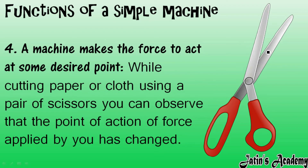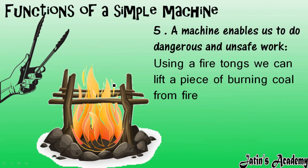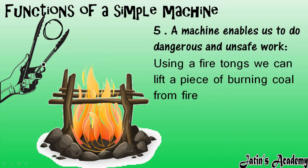The fifth function of a simple machine is that a machine enables us to do dangerous work. For example, if you want to burn a substance in fire, putting your fingers into the fire is unsafe. So we use a simple machine called fire tongs, which enables us to hold and burn the material in fire safely. This simple machine makes our dangerous work easier.